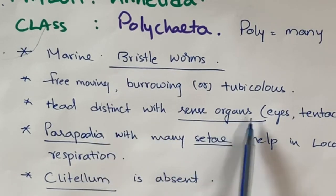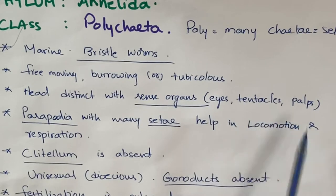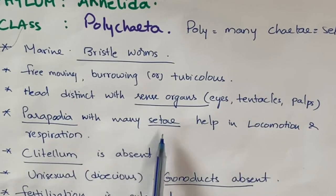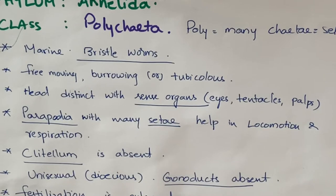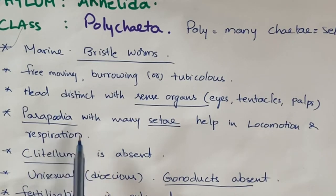Cephalization starts in Polychaeta. The head consists of sense organs like eyes, tentacles, and palps. Parapodia with many setae help in locomotion and respiration. The trunk region of the body consists of parapodia, which are useful for locomotion.